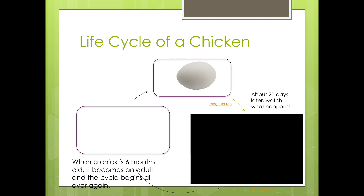When a chick is six months old, it becomes an adult, and the cycle begins again.